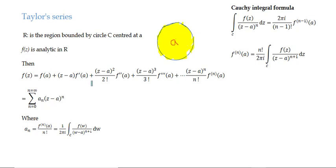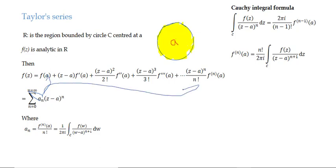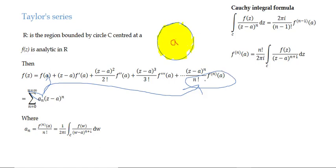Here f'(a) means df/dz, and f''(a) means d²f/dz² at z equal to a. This can be written as the summation from n=0 to infinity of a_n × (z−a)^n, where a_n equals f^(n)(a) divided by factorial n.